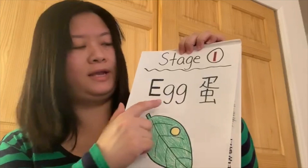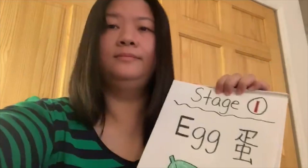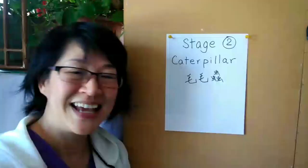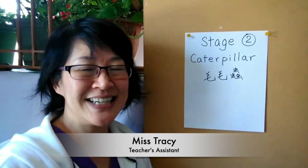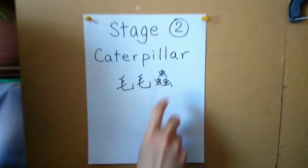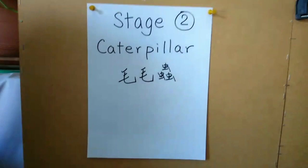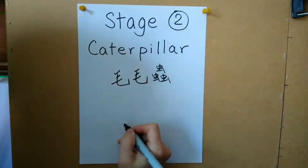Thank you for watching. Hi, 大家好,小朋友們好,我是Tracy。今天我來教大家來一起畫一個caterpillar。OK, 毛毛蟲。大家準備一張紙,然後我們一起來畫圈圈。It's a lot of circles, OK?